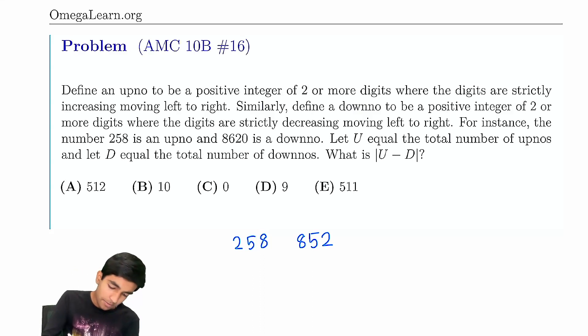Let's try another number. Let's say we have 1236. Now what happens when we reverse it? We get a downno. So it seems like whenever we have an upno, we can always reverse its digits to get a downno. So are the number of upnos and downnos just equal? Is this just zero? No.